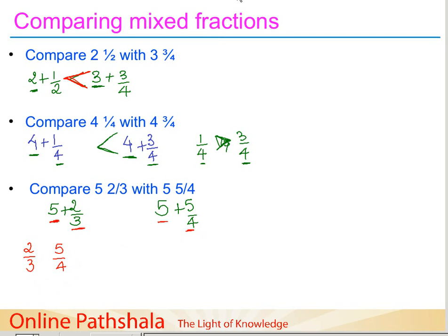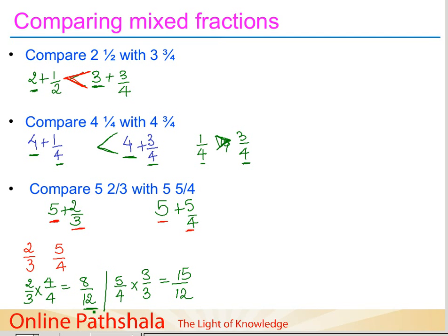We find equivalent fractions with denominator twelve. For two by three, multiply both numerator and denominator by four — three times four gives twelve — so the equivalent fraction is eight by twelve. For five by four, multiply both by three to get twelve as the denominator, giving fifteen by twelve. Now these are like fractions.